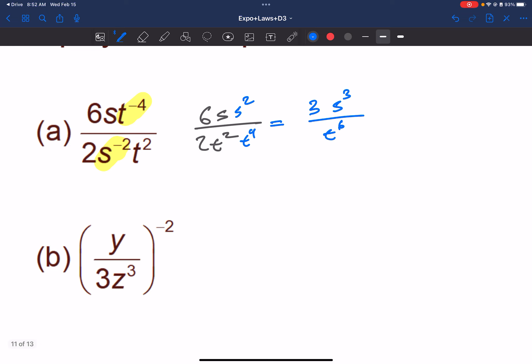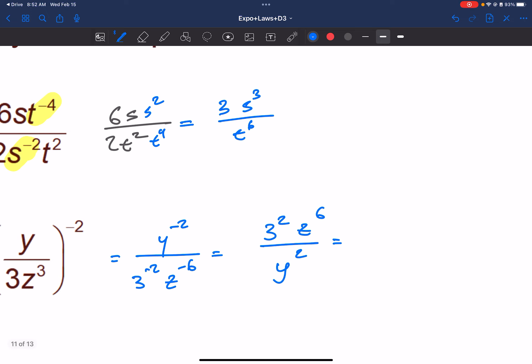Now, this bottom one, we're distributing the negative 2. So really what we're going to do is that y will be y to the negative 2, 3 to the negative 2, and z to the negative 6. Well, the negative exponents move to the other side. So really we'd have 3 squared over z to the 6, y to the second. And we could rewrite 3 squared as 9 if we really wanted to.